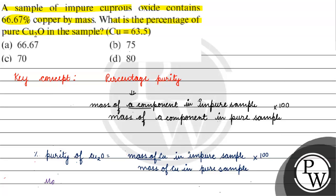For mass of copper in impure sample, it will have 66.67 percent of 100 gram. So we have to know mass of copper in impure sample.